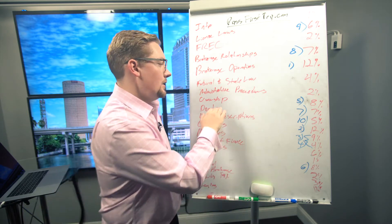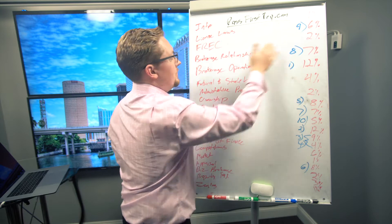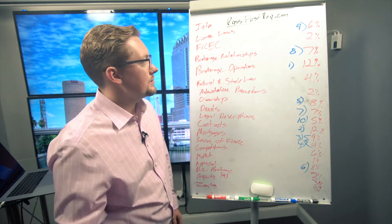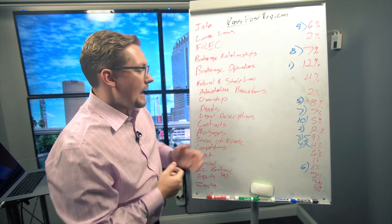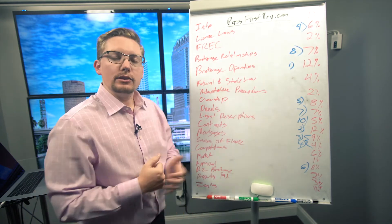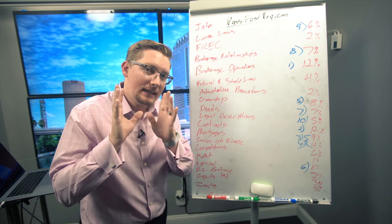Over here for Deeds, number seven, that's 7% of the exam. Number eight, Brokerage Relationships, that's another 7% of your exam. Number nine, the Licensing Laws, that's 6% of your exam. And then finally number ten, the Legal Descriptions. Now there's 19 units up here on the board, I just highlighted ten for you.